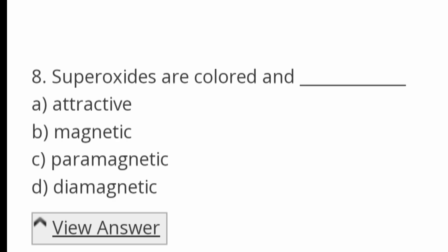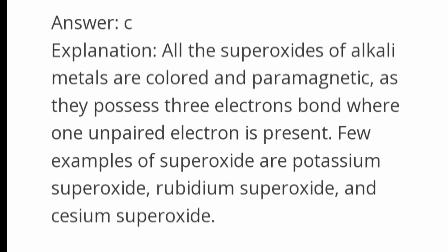Superoxides are colored and dash in nature. Options: attractive, paramagnetic, diamagnetic. Answer: paramagnetic. All the superoxides of alkali metals are colored and paramagnetic as they possess three electrons in a bond where one unpaired electron is present. Examples include potassium superoxide, rubidium superoxide, and cesium superoxide.